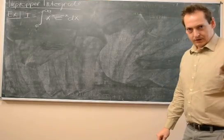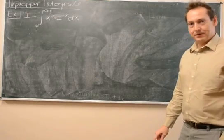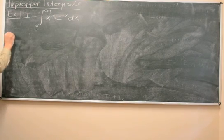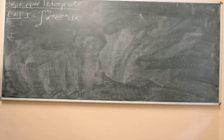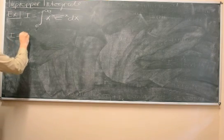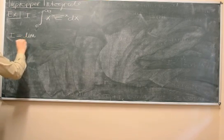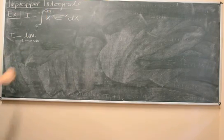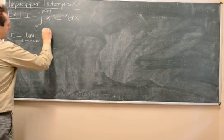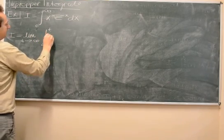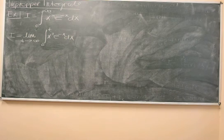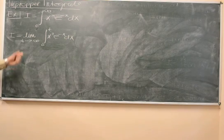Now let's look at an example of calculating an improper integral of type 1. We have the integral from 0 to infinity of x squared times e to the minus x. Remember, this is not a definite integral, so we have to express this as the limit of t going to infinity of the integral from 0 to t of x squared e to the minus x dx. The first step is to write this integral as a limit.